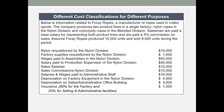Let's work a problem that puts some of these cost concepts together. It will help us see why we have different cost classifications for different reasons when making management decisions or preparing financial statements. Below is information related to 4A Ropes, a manufacturer of ropes used in rodeo sports. The company produces two product lines in a single factory: nylon ropes in the nylon division and nylon poly ropes in the blended division.